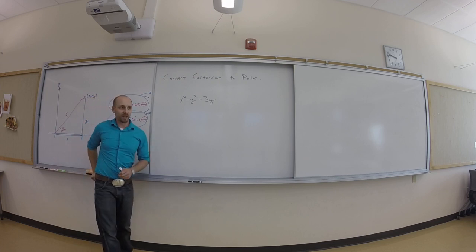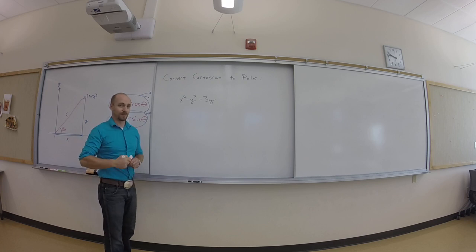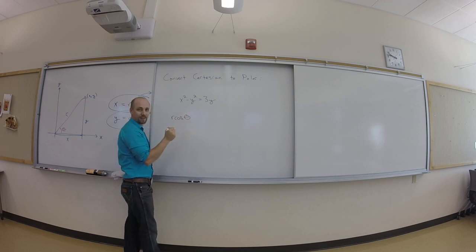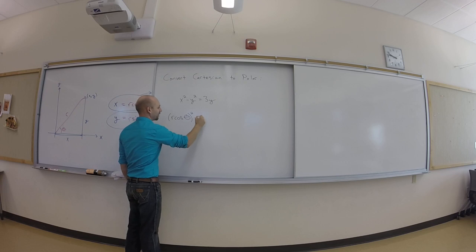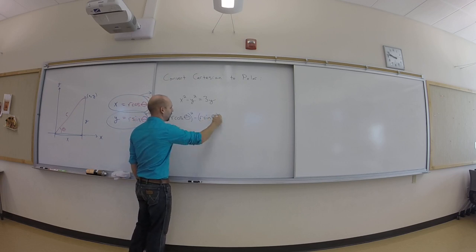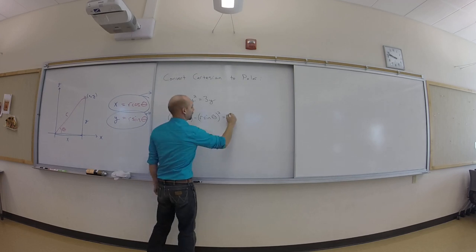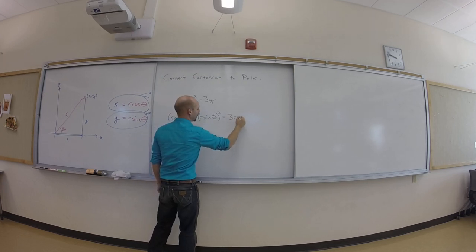Okay. So what do you get? R cosine theta squared. Okay, and here's maybe the only subtlety. R cosine theta all squared minus r sine theta quantity squared, all squared, is 3 times 3 R sine theta. 3 R sine theta. Oops, thank you. Sine theta.